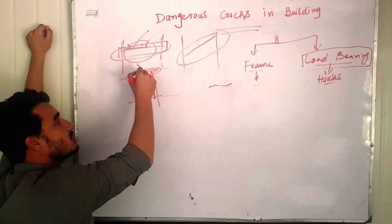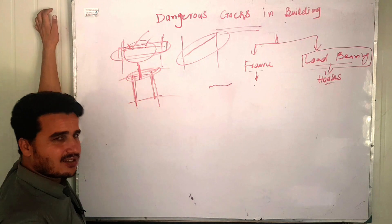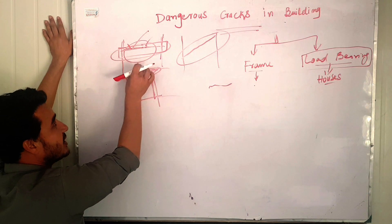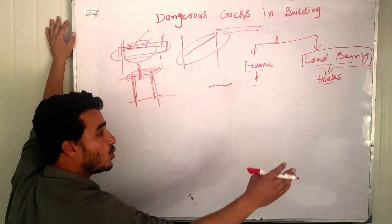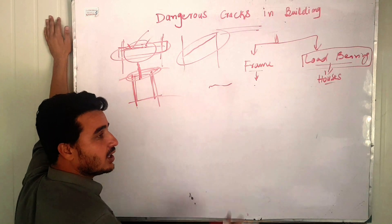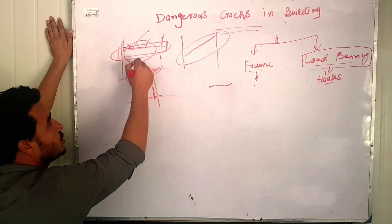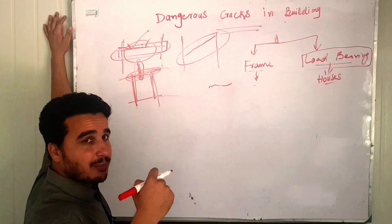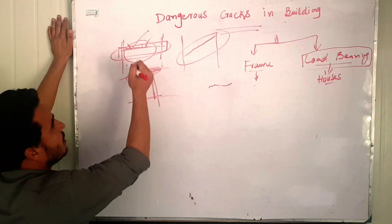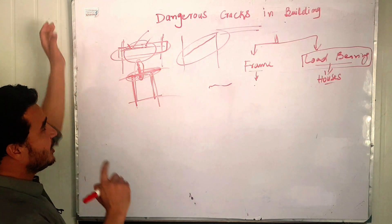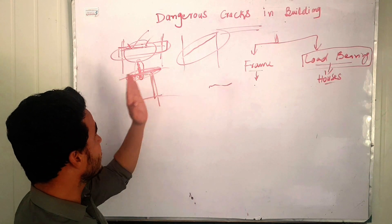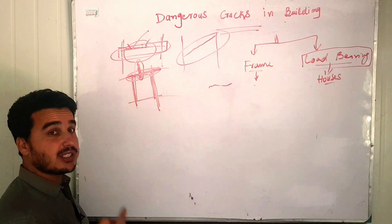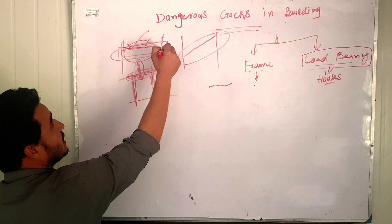Cracks near walls, doors, and window sides are not that dangerous because these are weak points in the structure. However, you shall consider a crack if its width is large enough that you can see light through it — in that case repair it. If a horizontal crack is only some millimeters or micrometers wide, it is not of great danger, but you should still monitor it.